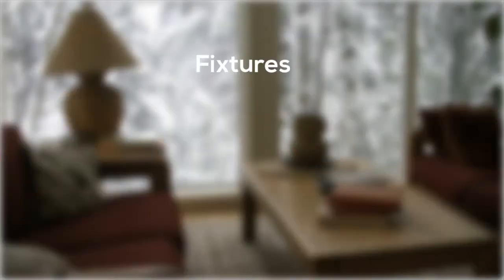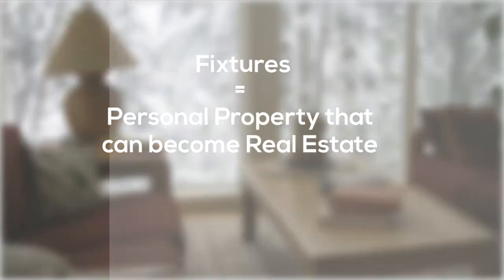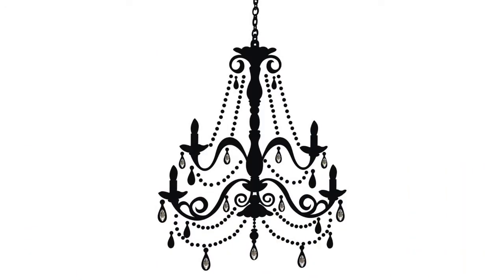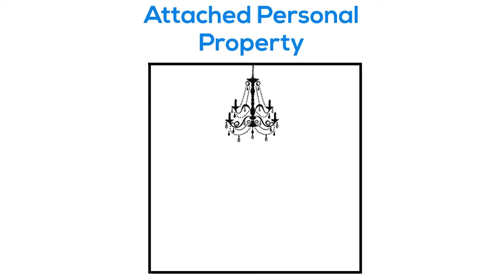Now we're moving on to fixtures. Fixtures are a type of tangible personal property and they can sometimes become part of real estate. Take a chandelier for example. Say you were renting a house and you decide to buy your own chandelier to hang in the dining room. The chandelier is your personal property but it is attached to the house. While it is attached to the real property, it is considered a fixture.